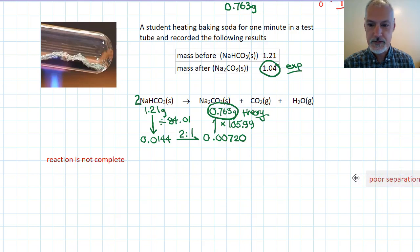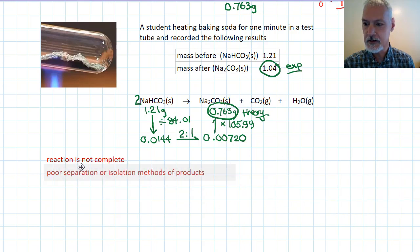Other potential things that could cause a difference in your theoretical and your experimental is poor separation methods. Perhaps the filter paper pores were too large and allowed some of the material to escape. Or upon heating, to drive off water, some chemical was actually driven off, spat out of the chemical upon heating.